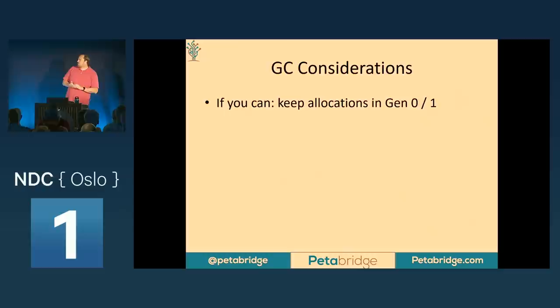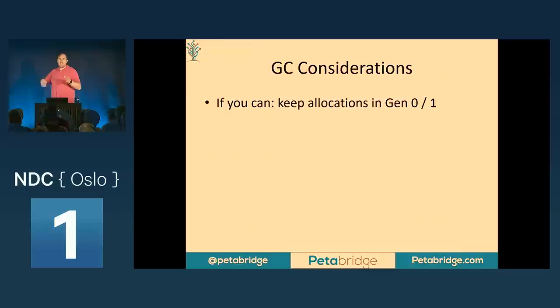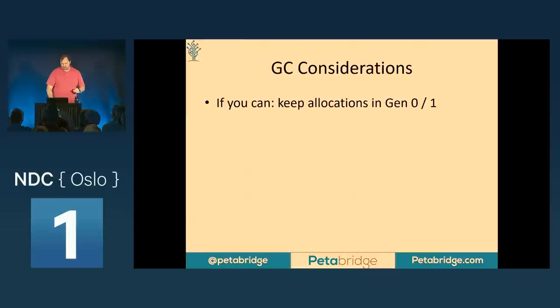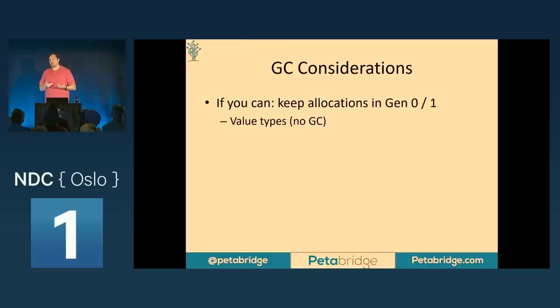For garbage collection from a performance standpoint, collection cost increases with the generation. A Gen 2 collection involves a lot more compaction and memory defragmentation from a lot more places. The garbage collector will introduce a GC pause on your foreground thread, or depending on configuration, background threads. The ability to avoid expensive Gen 2 garbage collection attempts will actually improve the overall throughput and efficiency of your application. If we can, we want to keep allocations limited to the stack (value types) or stay inside Gen 0 and Gen 1 — that results in the cheapest garbage collection overall and keeps memory less fragmented.